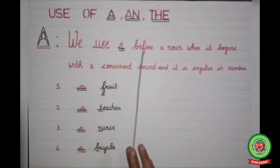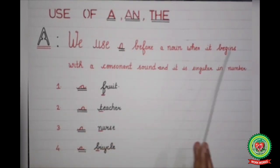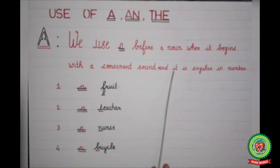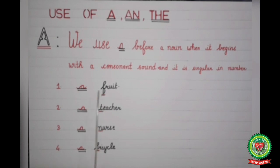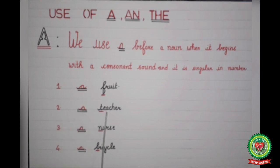The first article is 'a'. We use 'a' before a noun when it begins with a consonant sound and it is singular in number. For example: 'a fruit' — the word 'fruit' starts with a consonant sound F, so we have written the article 'a'. Next example: 'a teacher' — the word 'teacher' starts with a consonant T, so we have written 'a teacher'.